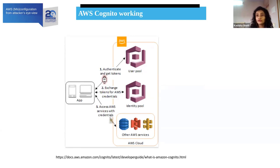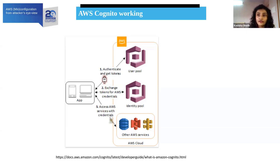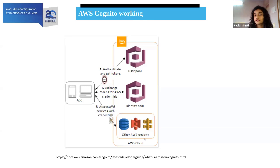The user pool comes into the picture when you do sign up or sign in. The identity pool is used for authorization purposes. The ideal approach is: you authenticate and get tokens — refresh token, access key ID, and all these tokens. Using those tokens, you get the AWS credentials, and using those credentials, you will have access to other services. This is how the identity pool and user pool come into the picture.